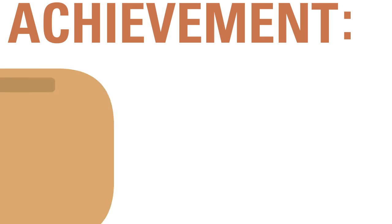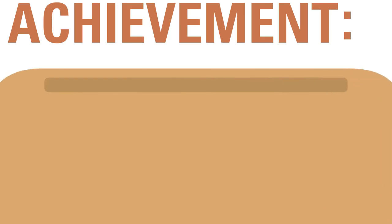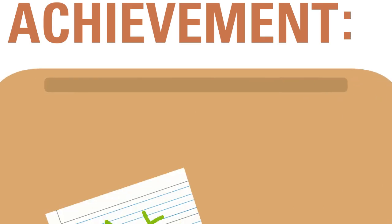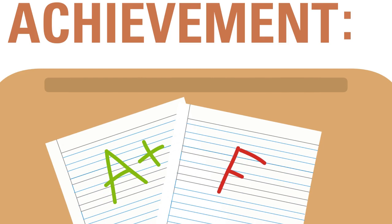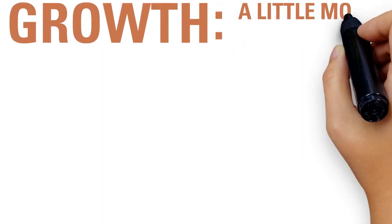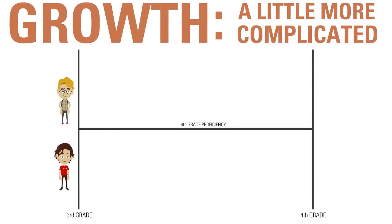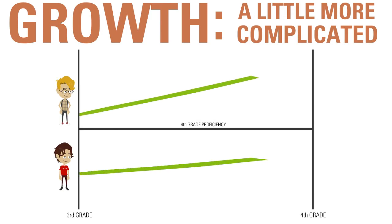Achievement, also referred to as proficiency, is pretty simple to understand. Does a student know the material at the time they're tested or not? Growth is a little more complicated. Growth compares students' expected progress over the course of one academic year to the progress they actually make in that year.